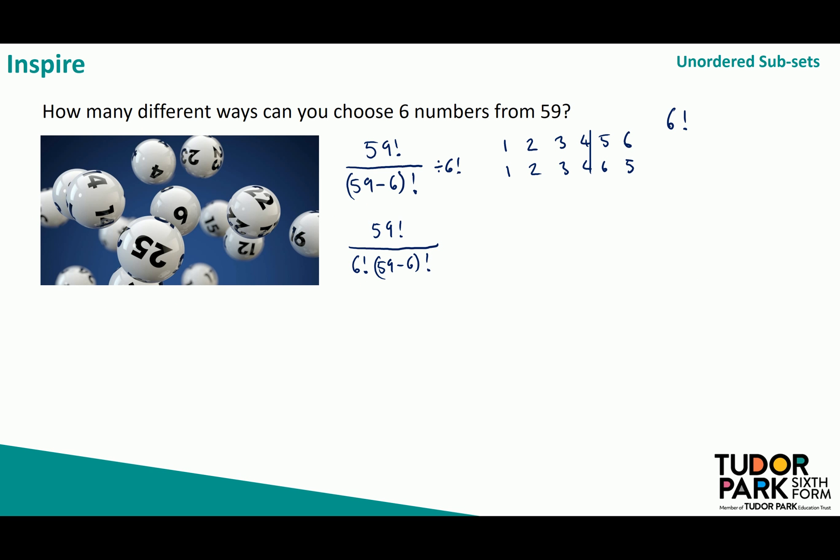Now this works out to be a very large number. Fortunately if you look on your calculator just above the division symbol you will see that there is something that says NCR so you can type in 59 shift divide six and it will show on your calculator 59 choose six which just so happens to be 45 million and 57 thousand four hundred and seventy four which again if you were looking for a reason not to play the lottery the odds of winning are one in 45 million and 57 thousand four hundred and seventy four.